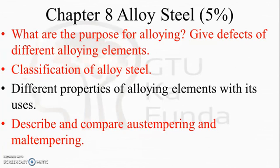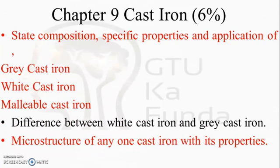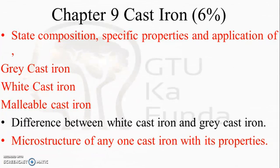Chapter 9 is Cast Iron. Here, you should state the composition, specific properties, and applications of gray cast iron, white cast iron, and malleable cast iron. This is important because GTU can ask you to draw the microstructure of a particular type of cast iron. Know the difference between white cast iron and gray cast iron as well. Since no marks are mentioned for any specific question, they can ask about composition, microstructure, specific properties, and applications of all types individually or in combination.